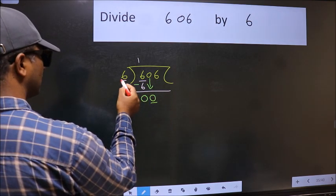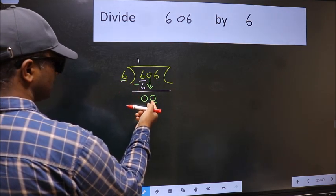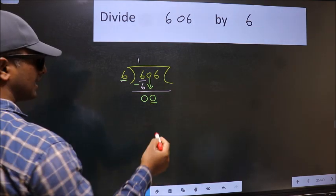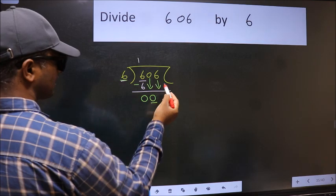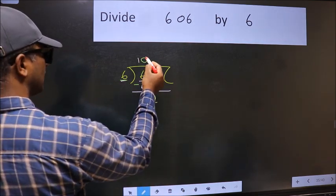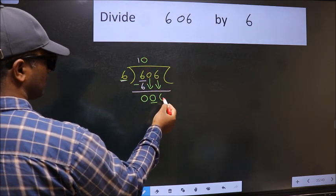Now here we have 0 and here 6. 0 is smaller than 6, so we should bring down the second number. And the rule to bring down the second number is we should put 0 here. Then only we can bring this number down.